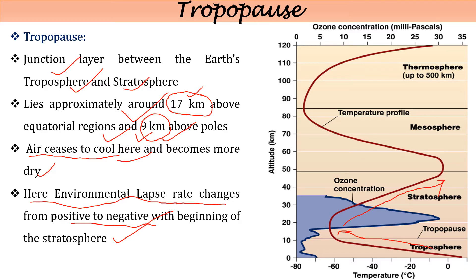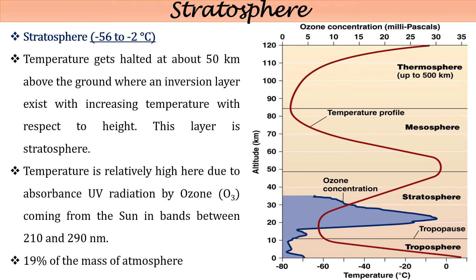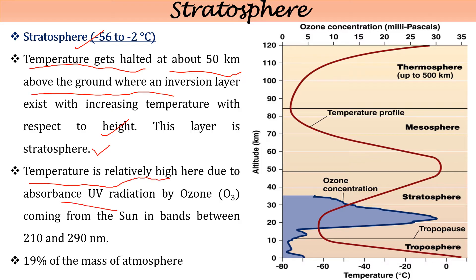The second most important layer is the stratosphere, where temperature ranges from minus 56 degrees Celsius to minus 2 degrees Celsius. Temperature is halted and then rises up to about 50 kilometers, where an inversion layer exists — temperature increases with height. This is because the stratosphere absorbs UV radiation from the sun via ozone molecules in the band of 210 to 290 nanometers, causing the temperature rise.